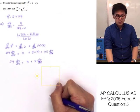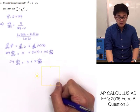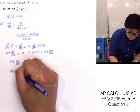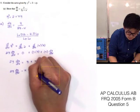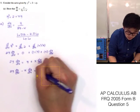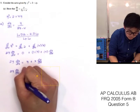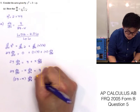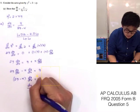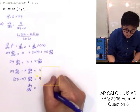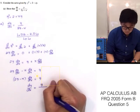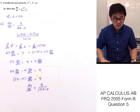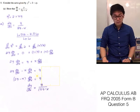So now we have 2y dy/dx equal to y plus x dy/dx. Since we're solving for dy/dx, we isolate it on the left side: 2y dy/dx minus x dy/dx equals y. By factoring, we have (2y minus x) dy/dx equals y, therefore dy/dx equals y over 2y minus x, which is the same as what we're trying to show on part A.